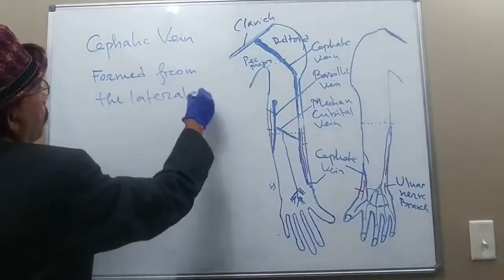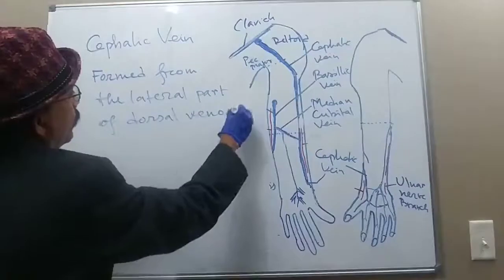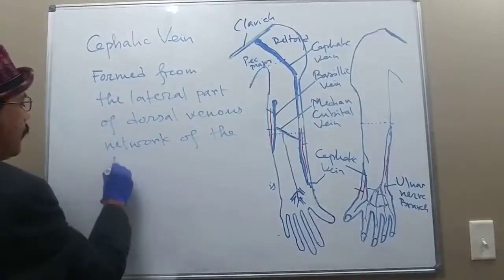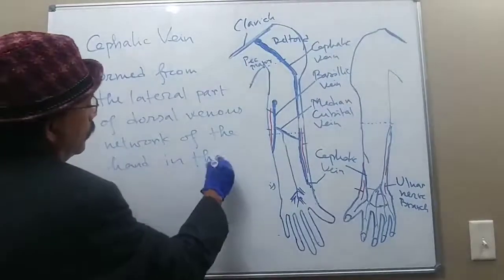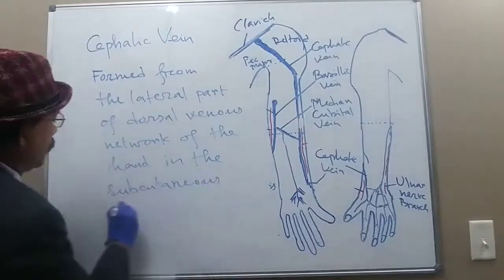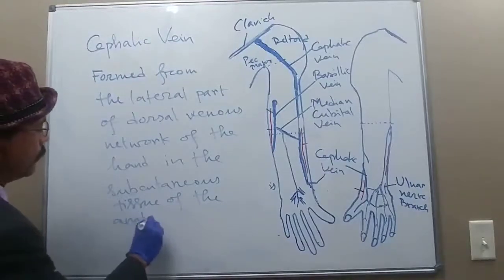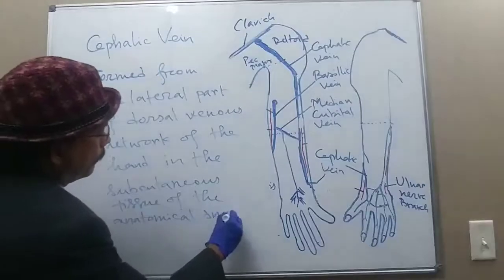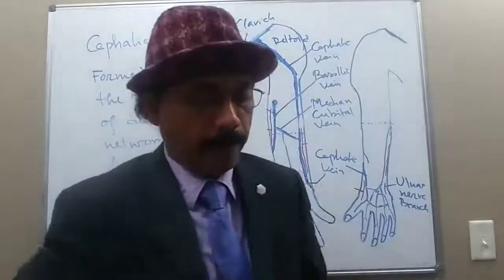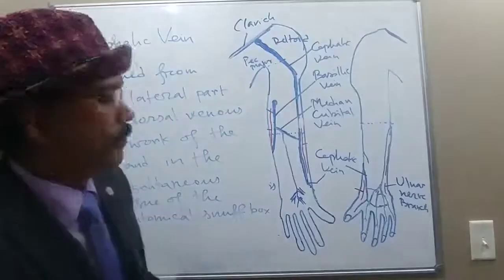The cephalic vein is formed from the lateral part of the dorsal venous network of the hand, in the subcutaneous tissue of the anatomical snuffbox. Now we will find out how the cephalic vein passes and where it goes.